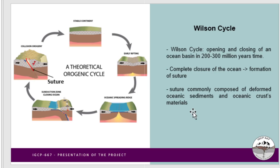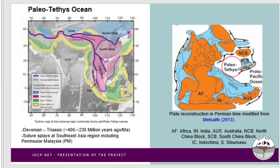The suture will be composed of all the deformed oceanic sediments and oceanic crust materials, which you can find in the present oceanic basin. One of the famous ancient oceans is called the Paleotethys. This ancient ocean existed from Devonian to Triassic time, about 400 million years to 230 million years ago.